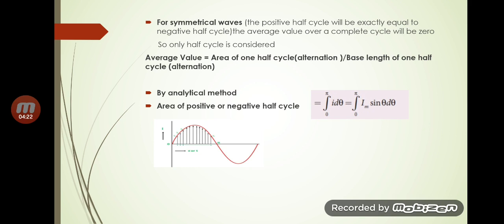For the negative half cycle, the range is from π to 2π, and the base length for the half cycle is π. For a symmetrical wave, the average value is found by taking only one half cycle. Notably, DC meters — ammeters and voltmeters — indicate the average value.